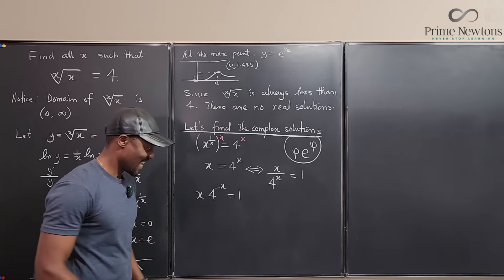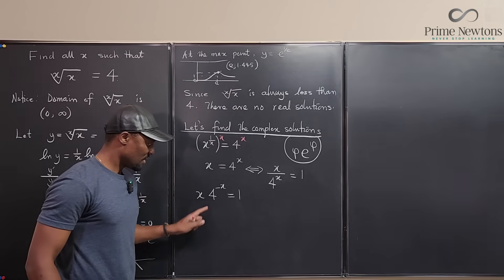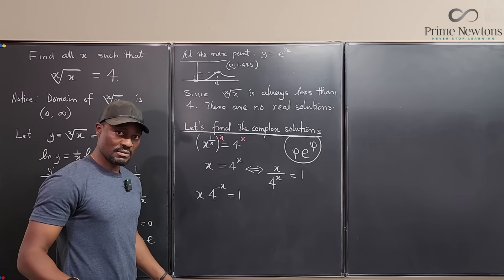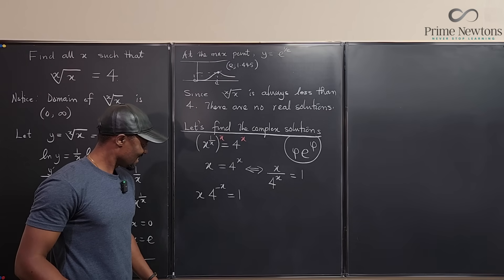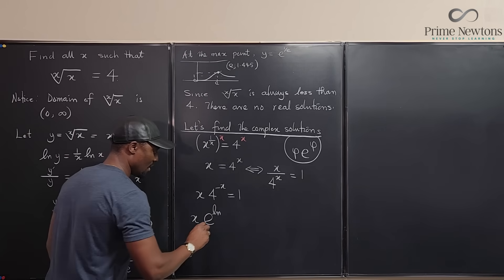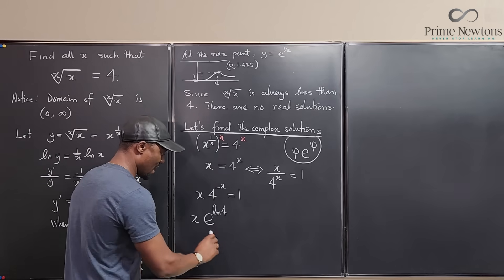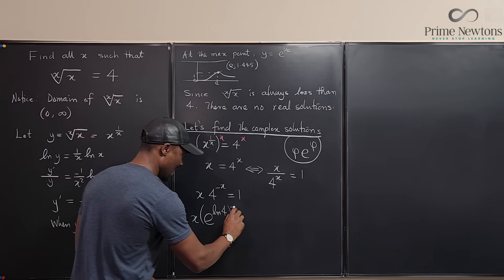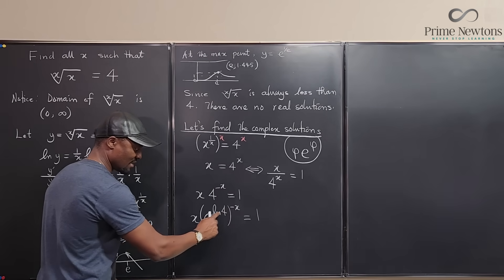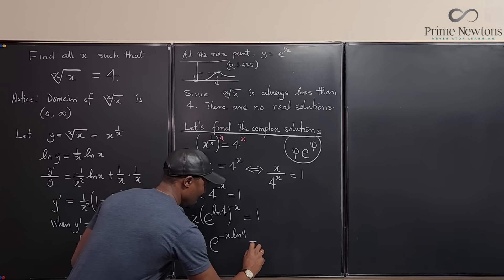The issue is I need the base to be e. Since 4 = e^(ln 4), I can write x · (e^(ln 4))^(−x) = 1, which becomes x · e^(−x ln 4) = 1. Now I need the coefficient of e to match its exponent. Multiplying both sides by −ln 4 gives (−x ln 4) · e^(−x ln 4) = −ln 4.